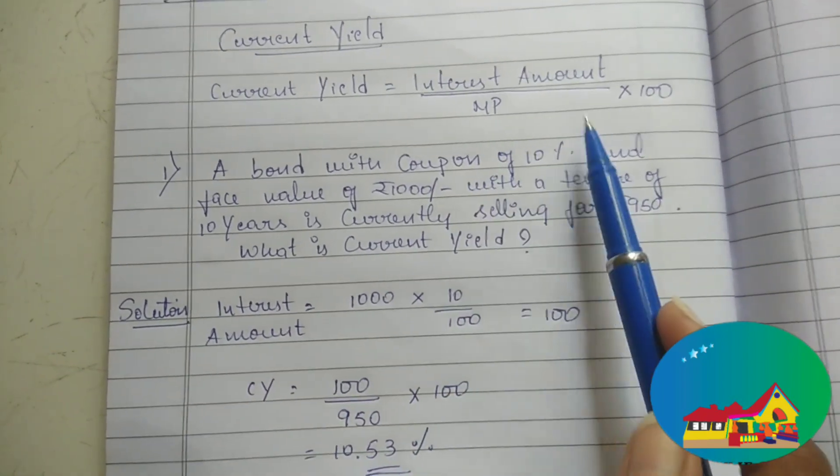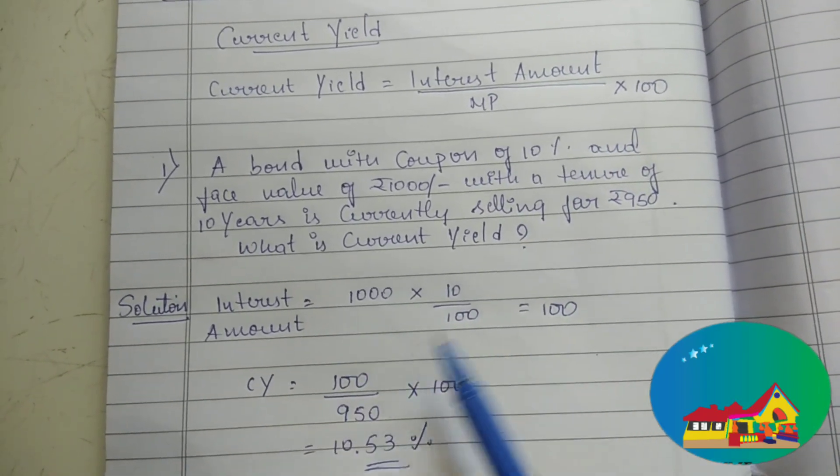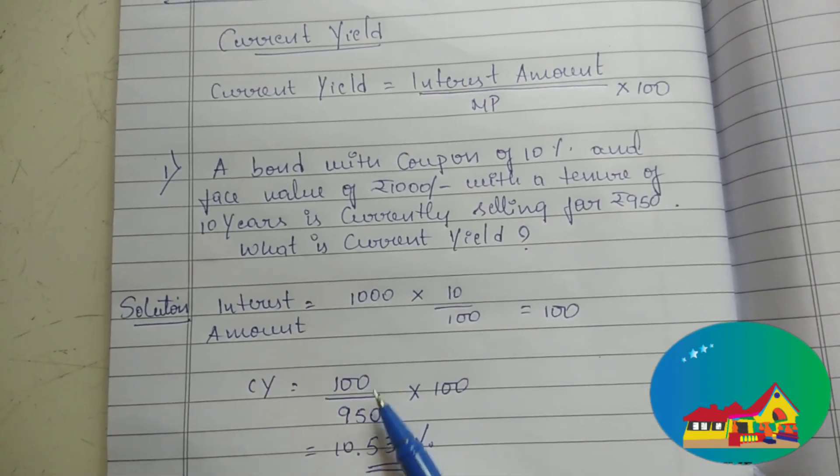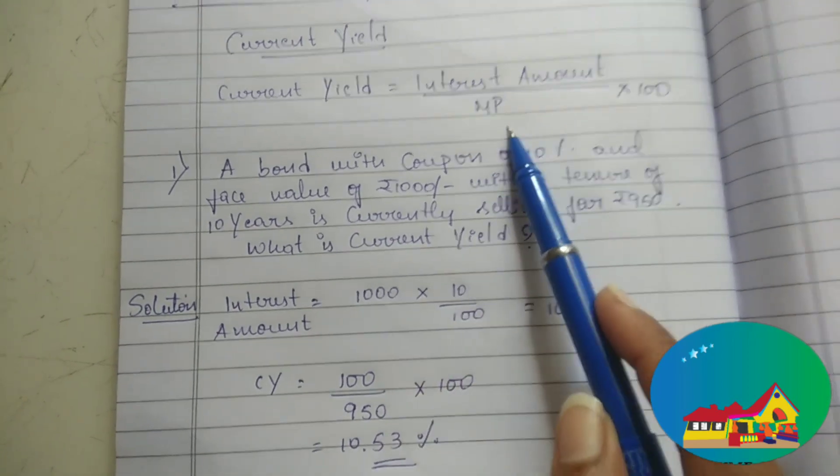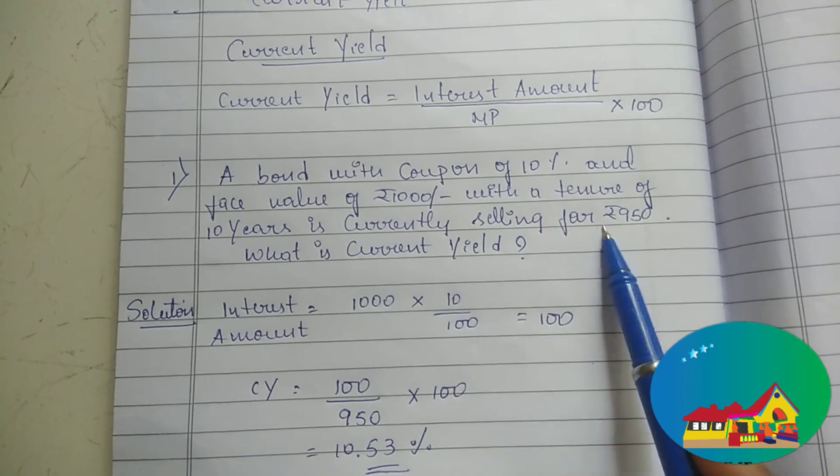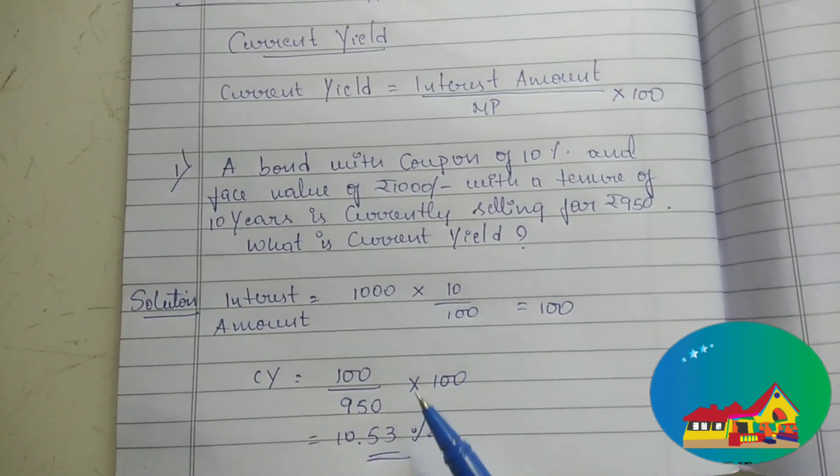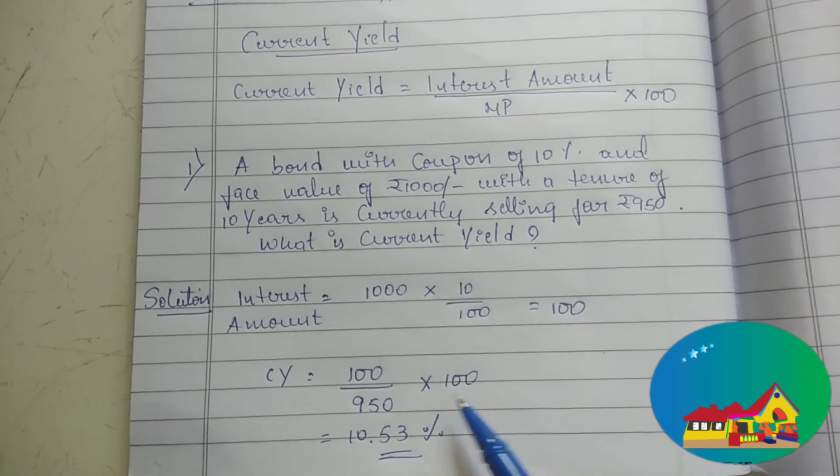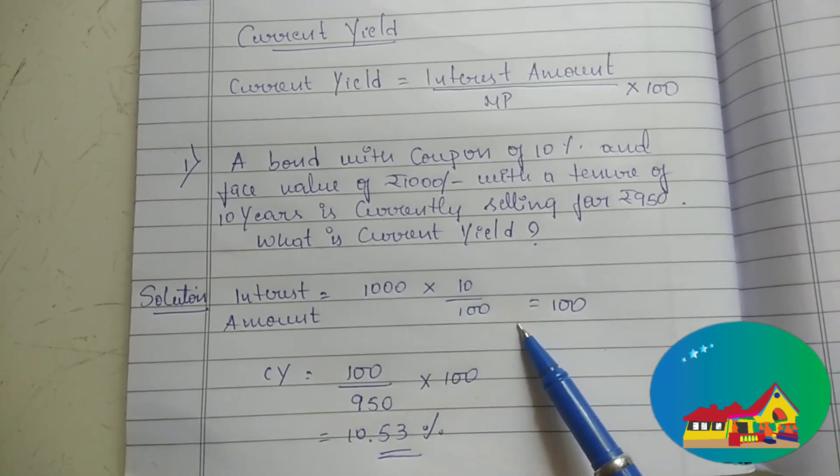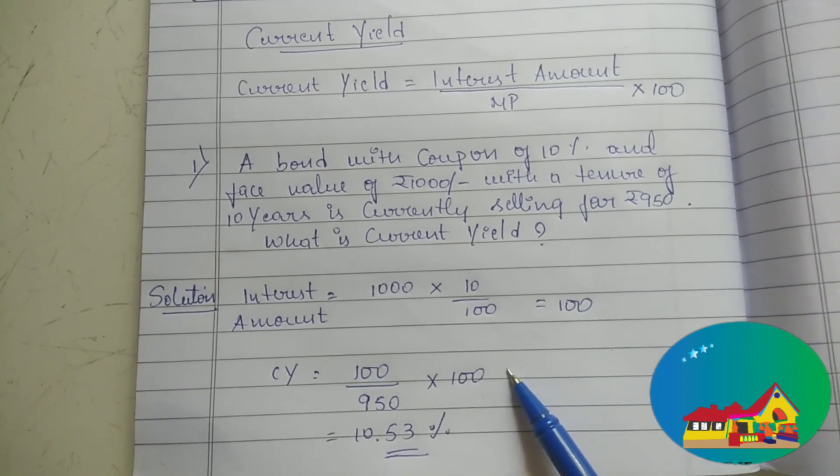Current yield formula, interest amount divided by market price into 100. Interest amount is 100, so we have to put 100 here, then divided by 950. Market price is 950, selling is 950. That is current market price. So, 950 into 100 as per the formula. 100 divided by 950 into 100, it is 10.53. Current yield, I will express the percentage of 10.53. This is the answer for current yield.